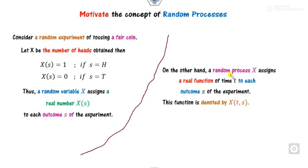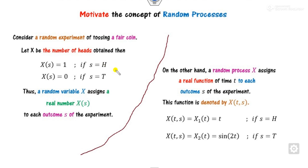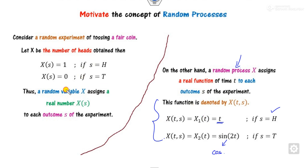On the other hand, what is a random process? A random process is when we assign a function dependent on time to each of the outcomes — that is called the random process, denoted by X(t). For example, if we define X₁(t) as some value when it is head, or sine(2t) when it is tail, we can define it as cosine or any other function depending on the choice. This process is called the random process. However, if they are independent of time, we call it a random variable.